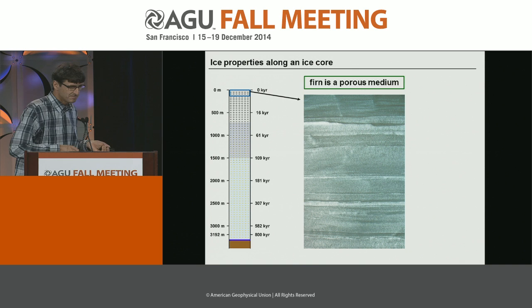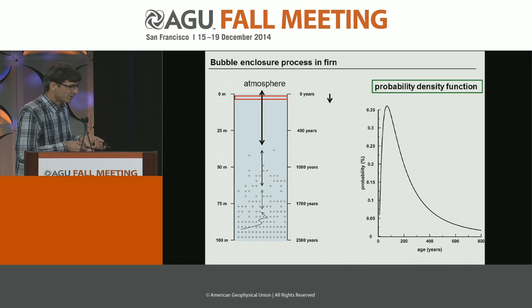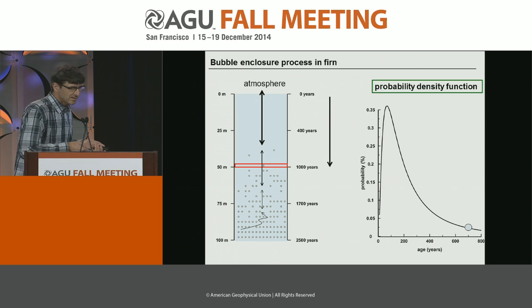Firn is a porous medium, and in this firn, air can easily exchange between the atmosphere and the firn. Starting with snowfall in the upper part, snow layers transfer downward with the accumulation rate and vertical velocity, and a few bubbles already enclose very early. These bubbles actually form the broad tail of the age distribution.